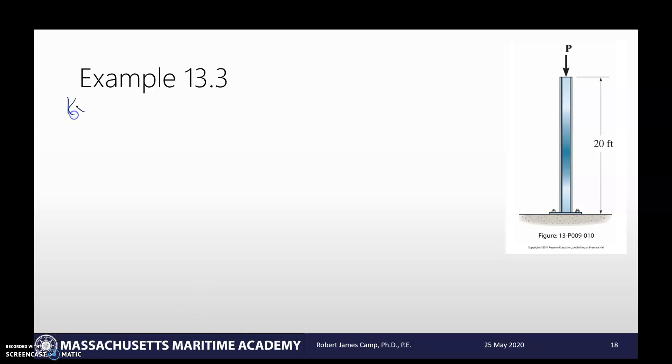So our K for X, if it's free, if it's a fixed and free column, that K is going to be 2. And then I know that my moment of inertia, which is given to me in the problem, so Ix, is 385 inches to the fourth. Now I'm going to have to look up, I have A36 steel.